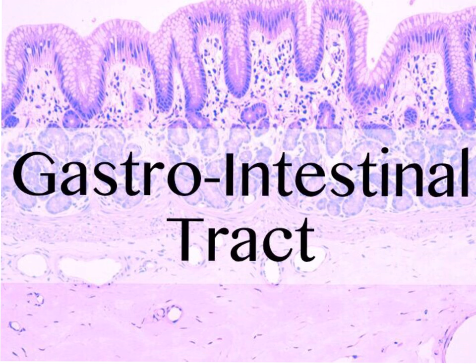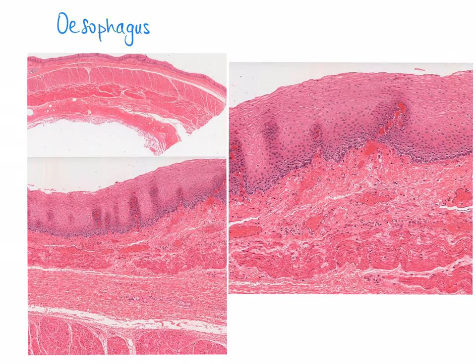In terms of the gastrointestinal tract, we want you to be able to identify the segment of the tract you're in based on histological images. The layers we will take you through include the mucosa, submucosa, muscularis, and then the serosa or adventitia, going from the mouth to the bottom of the large intestine. Welcome Mario — can you start us off with the esophagus and how it looks histologically?